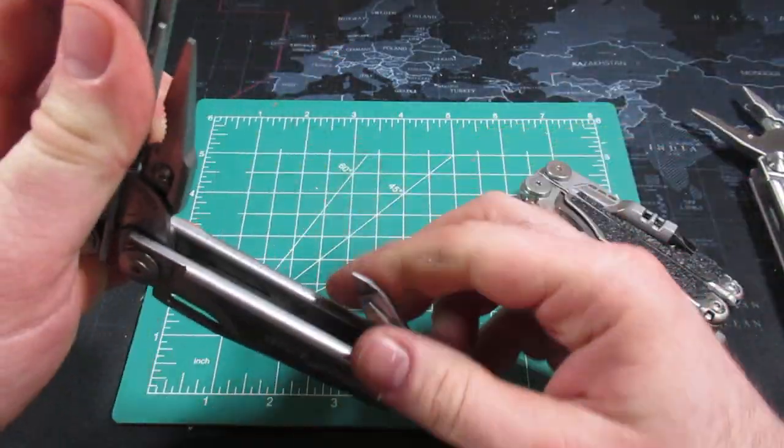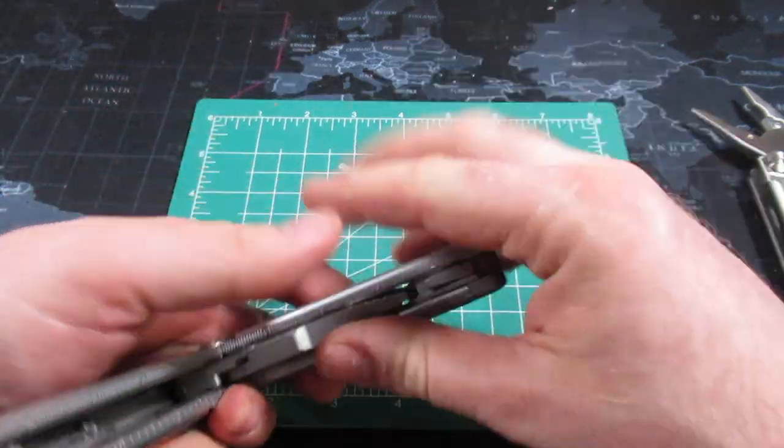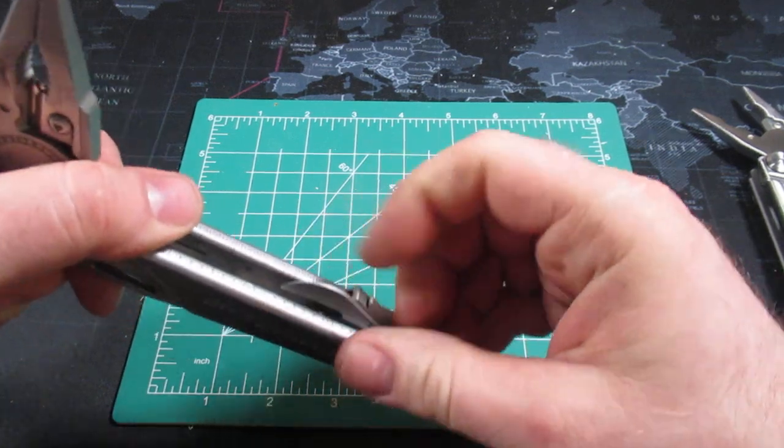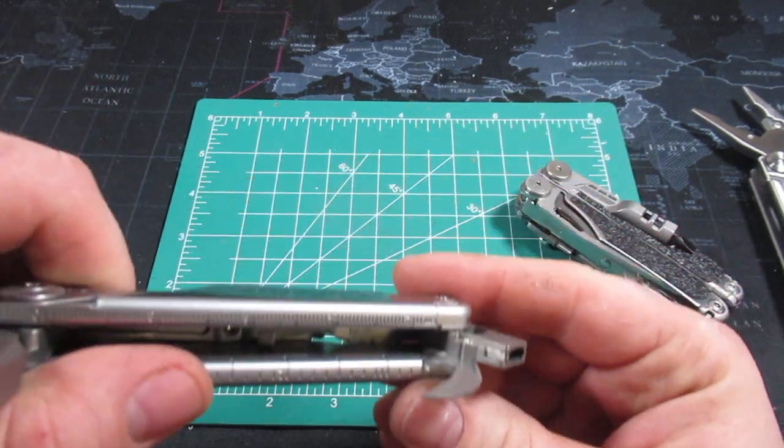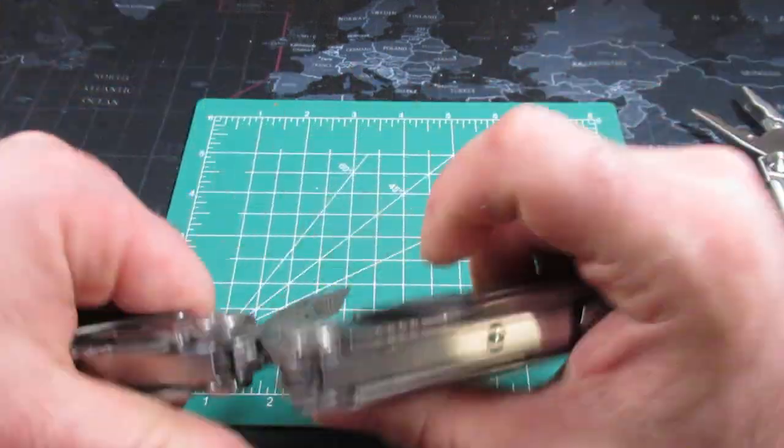So for instance, let's look at the Leatherman Surge. Here we go. This is the small screwdriver the Captain does not have. Otherwise it's fairly similar. You've got your bit driver, and then you've got your combination tool. I don't have my bit in there at the moment.